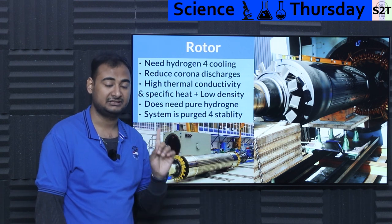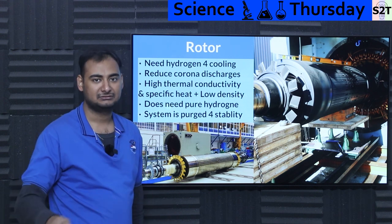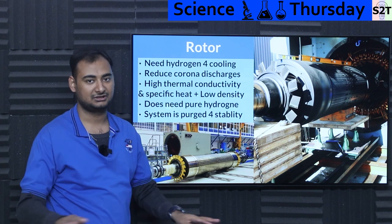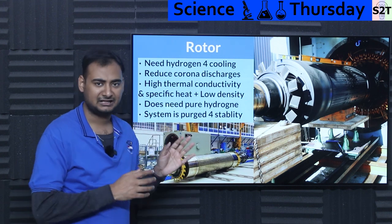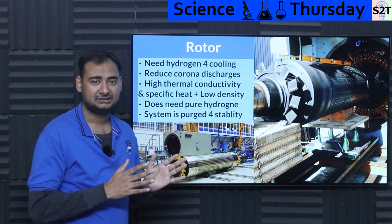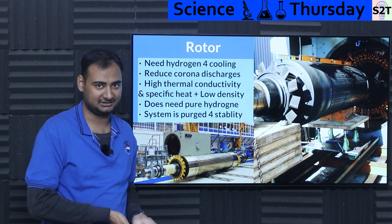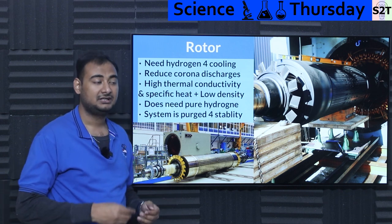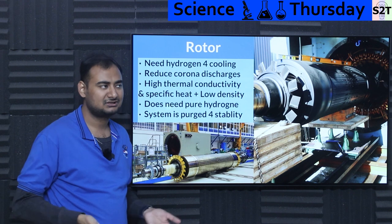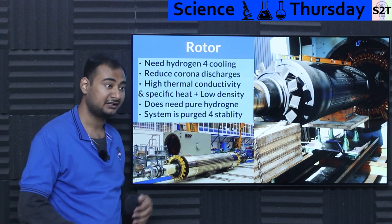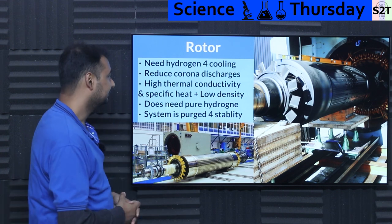Anytime the generator detects purity is not high enough, it will first trigger alarms. If nobody rectifies the situation, it will shut the generator down. Does it cause an explosion? Rarely — because inside the chamber it's close to 100% hydrogen, so there's not enough oxygen to combust. Outside, as long as concentration is below 4%, it won't ignite. Venting procedures are in place to prevent accidental explosions. That's how the rotor is protected.